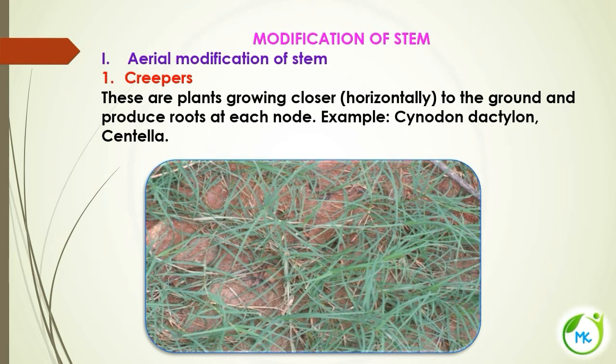The stem gets modified to do certain functions. The modification of stem can be classified under three headings: aerial modification, subaerial modification, and underground modification. First, we are going to see aerial modification of stem. Aerial modification is how the stem is getting modified above the ground surface — that is called aerial modification of stem.